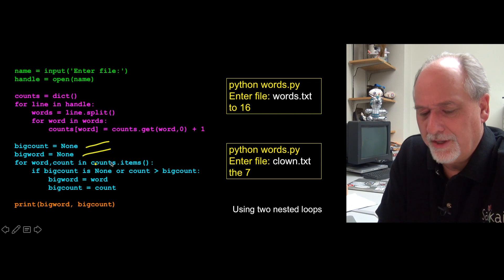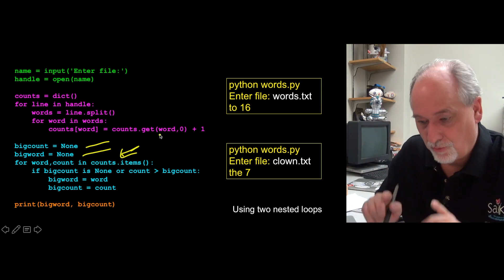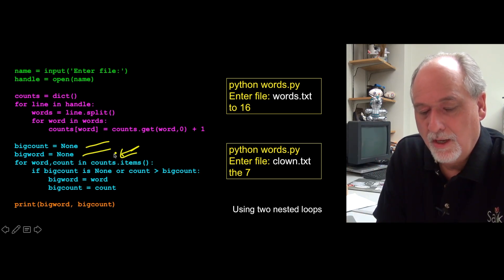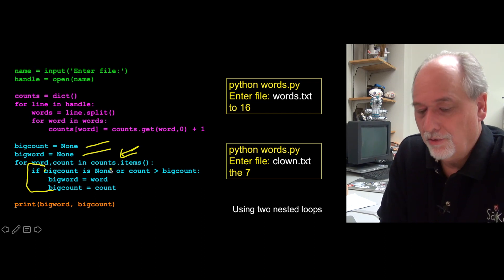We have to prime our loop and we're going to say to none. And so then we're going to write one of these cool things that says for word comma count. So word and count are going to go through the key value pairs. Because we've got items here. So it's going to go through the key value pairs. Loop through each key value, whatever it was. There could be a million words in here. We're going to go through every one. And what we're going to do is we're going to make sure that big count is the current largest count we've seen so far. And if it's none, well, then we haven't seen anything.